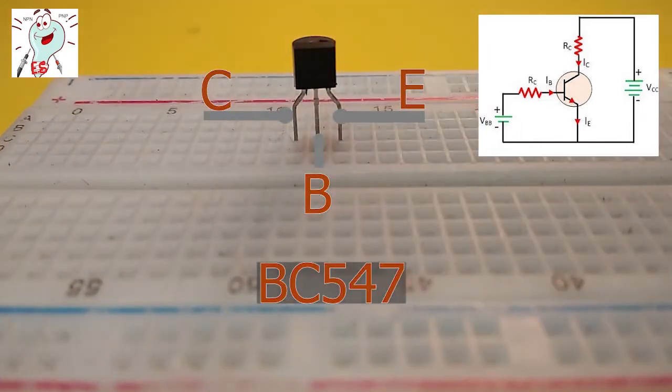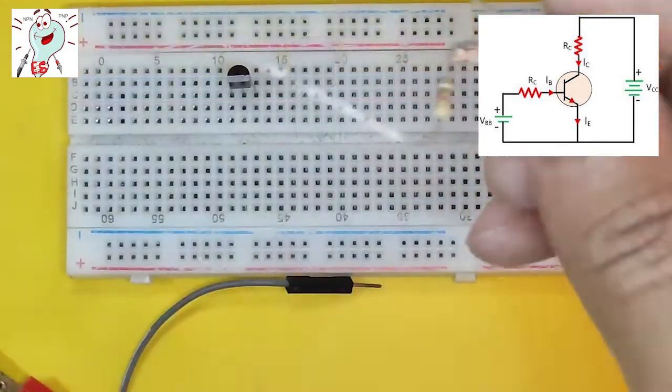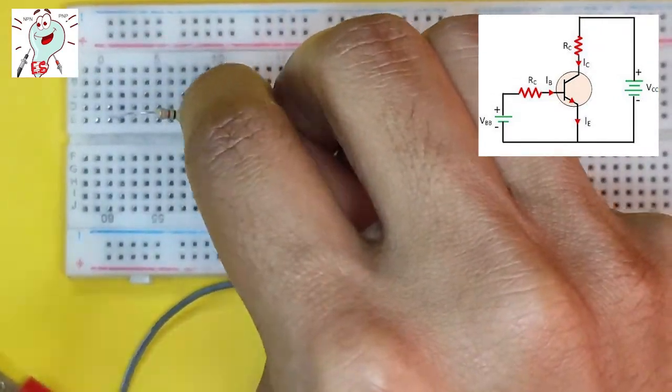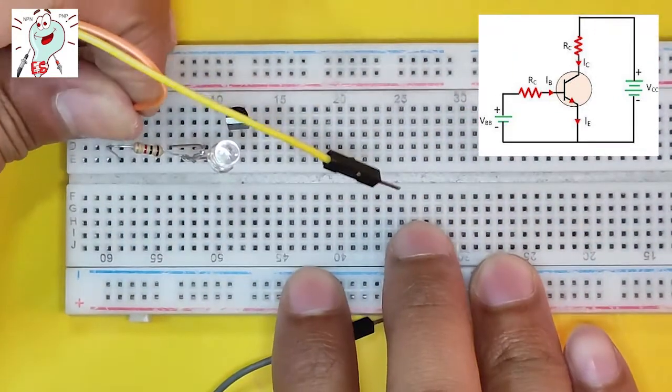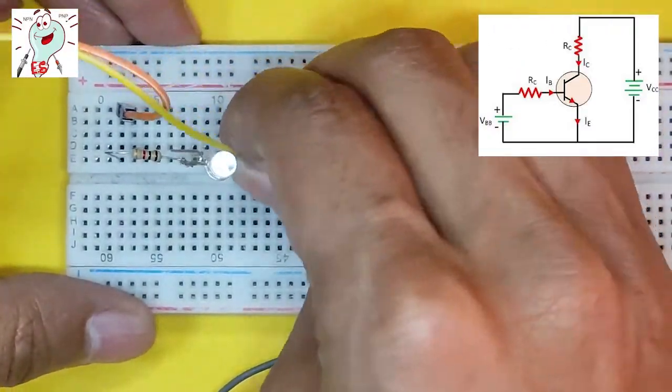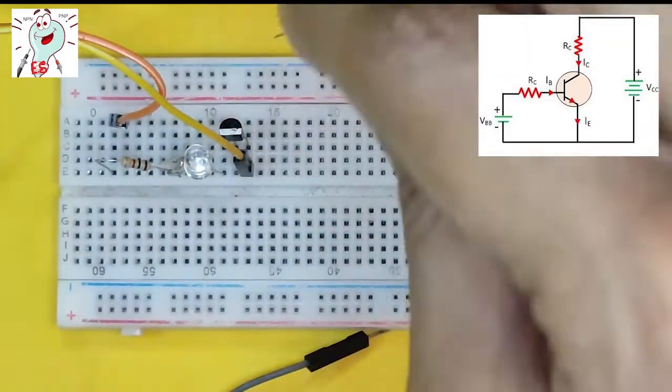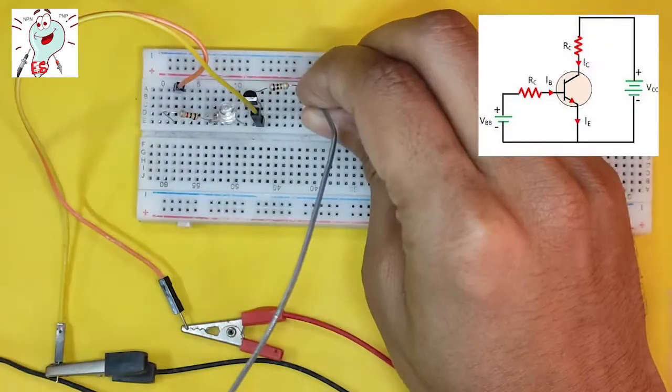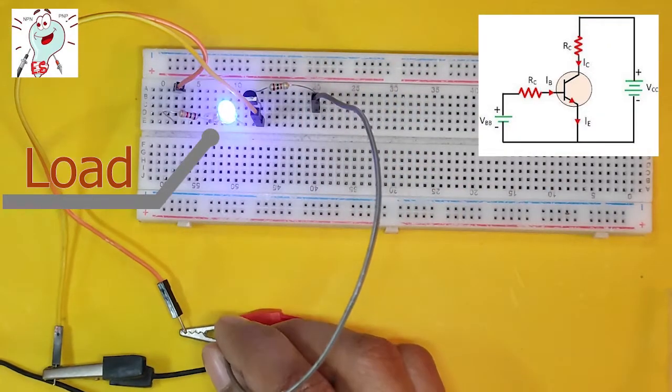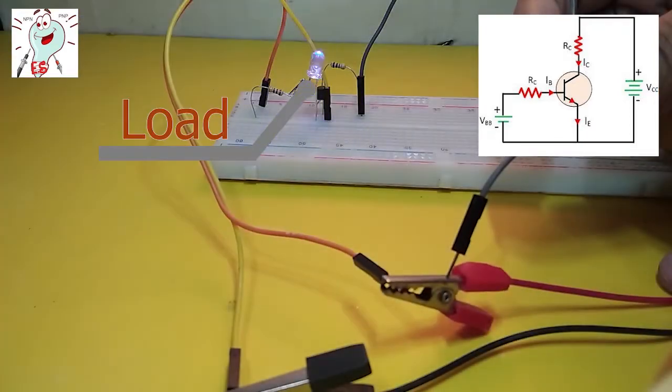For this simple practice, I'm going to connect the emitter to ground and the load between the collector and supply voltage. If we supply voltage to the base, then the transistor will activate.